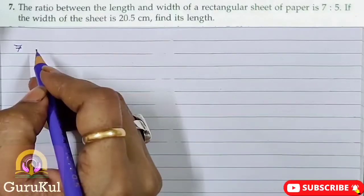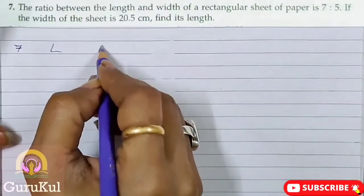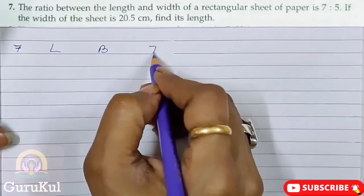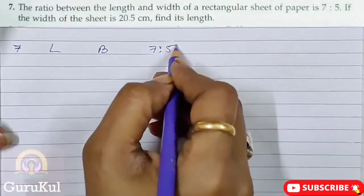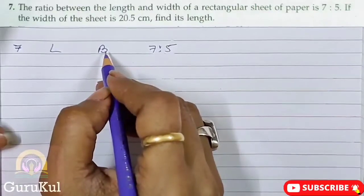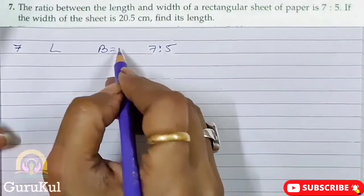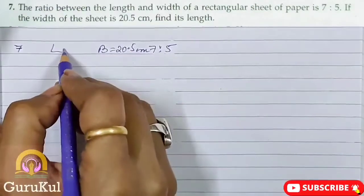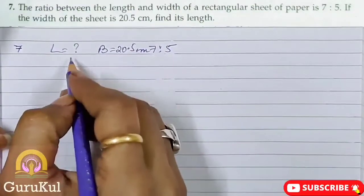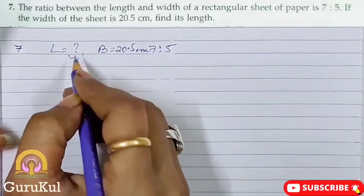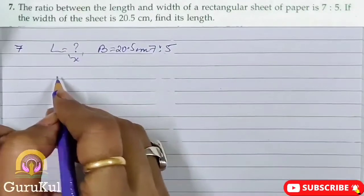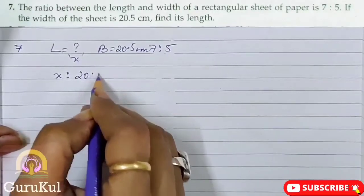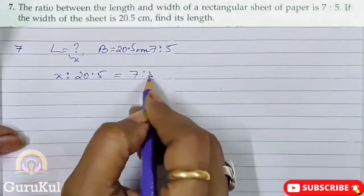Question 7. The ratio between the length and breadth of a rectangular sheet is 7 is to 5. Breadth and width are the same. So that is 20.5 cm. So we need to find the length. So we take length as X. So now what will be the ratio form? X is to 20.5 is equal to 7 is to 5.